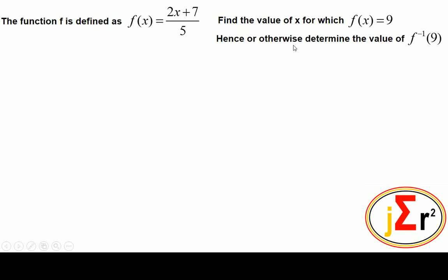We did 'hence' on a previous slide. Now we are going to do 'otherwise' on this slide. We are not going to make use of the fact that if f(x) = 9 then x = 19, therefore f(19) = 9. We are not going to use that fact in solving the problem on this occasion. What we will do is solve it in isolation — separately and apart from what we did on the previous slide.